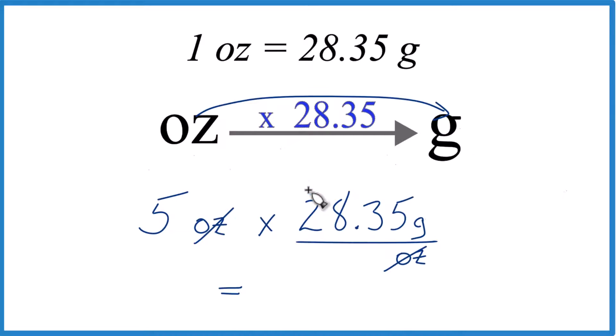So 5 times 28.35 is 141.75. I'm going to call it 141.8. The unit's right there. Grams.